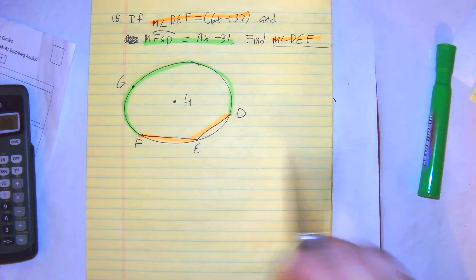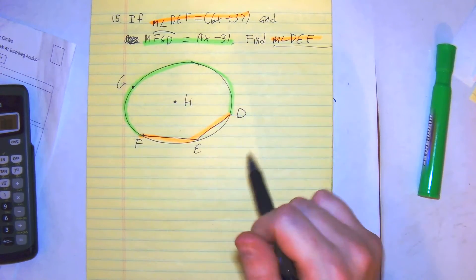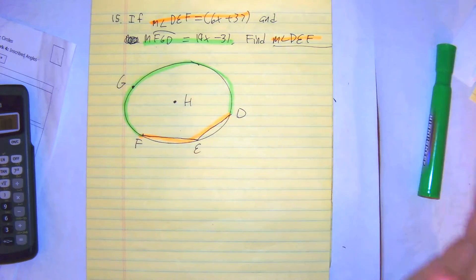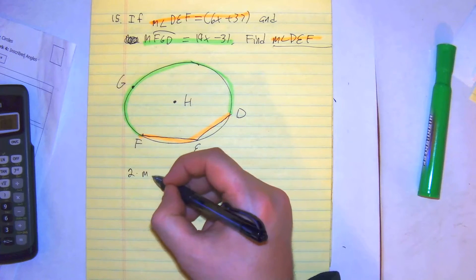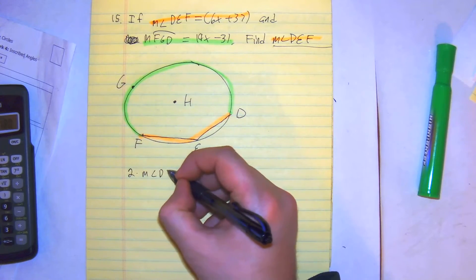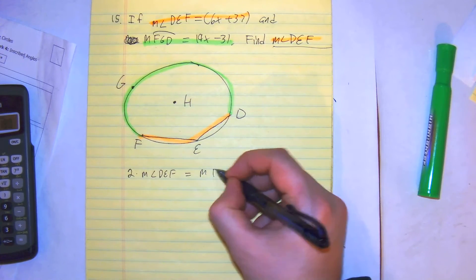Okay, so we know this is half the size of that, so I'm just going to do 2 times DEF. I think that would be easier. So it would be 2 times the measurement of DEF is equal to the measurement of FGD.